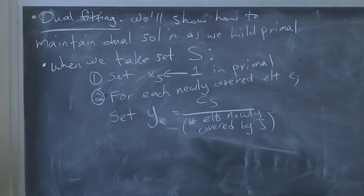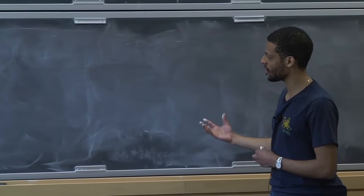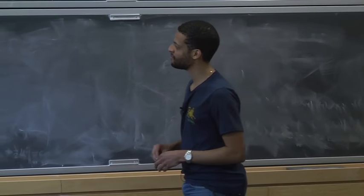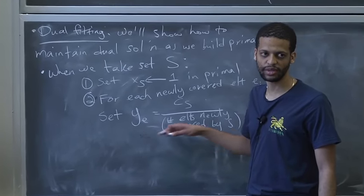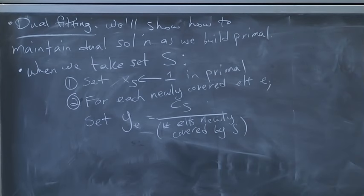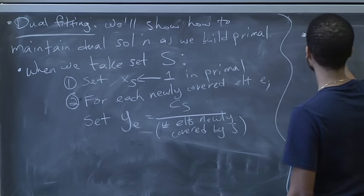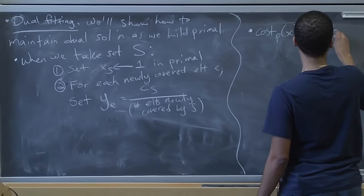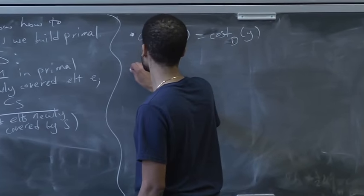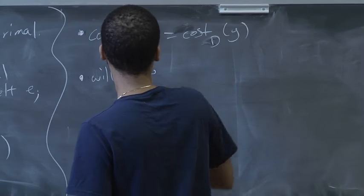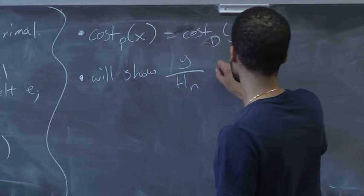By weak duality, if we have two feasible solutions — one for the primal, one for the dual — we know the primal cost is at least the dual cost, where OPT is sandwiched in between. But they have to be feasible. As it turns out, this Y might not be feasible. But we'll show that if you entry-wise scale down by log N, it will become feasible.